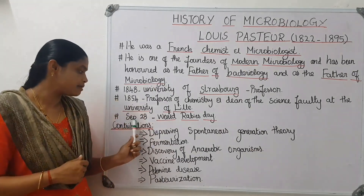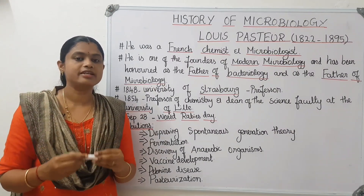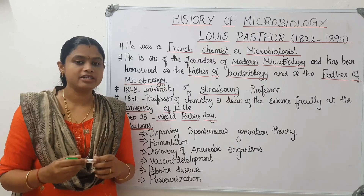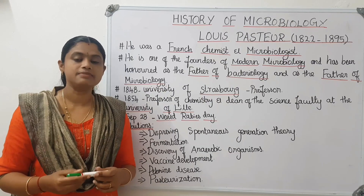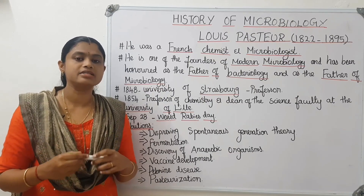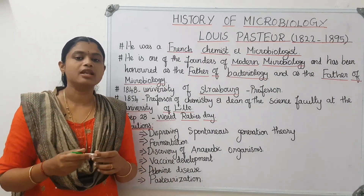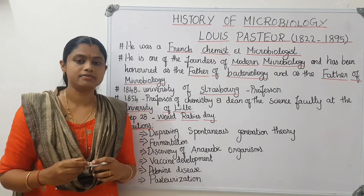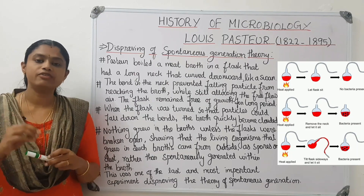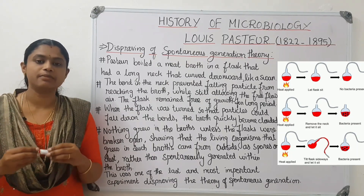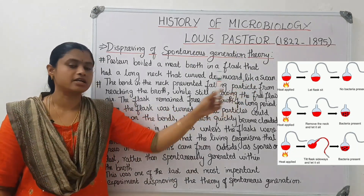The first contribution is the Disproving of Spontaneous Generation Theory. Louis Pasteur used a different type of flask. It has a curved neck — this is called the Swan Neck Flask.